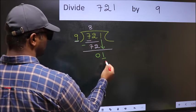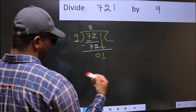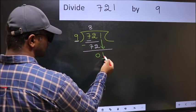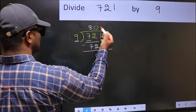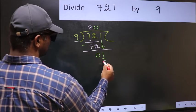If I take 1, we will get 9. But 9 is larger than 1, so what we should do is we should take 0. So 9 into 0, 0.